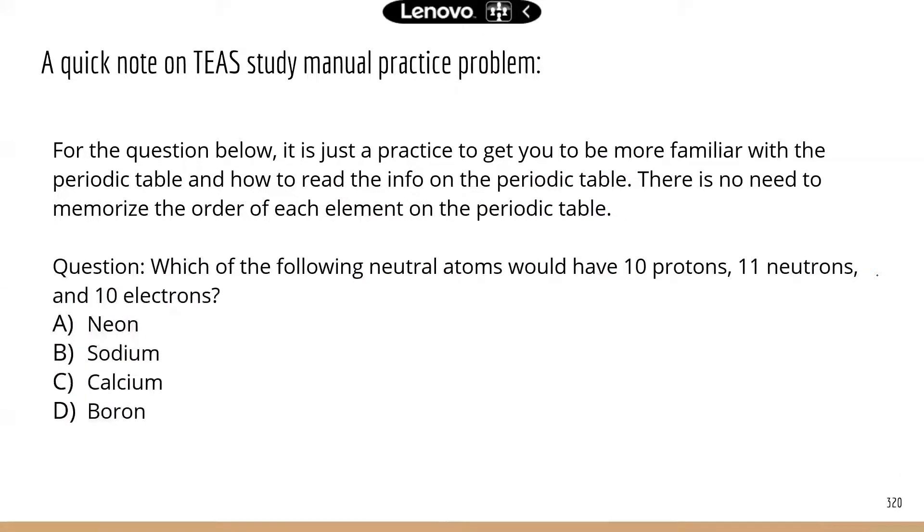I just want to note something from the TEAS study manual. There are some questions that require you to look up the periodic table. Like I said earlier, don't worry about memorizing anything. If you see a question like this, there will be a periodic table provided to you. So you can just click somewhere, get the periodic table out, and then use that information to answer the questions. For example, in here, it just asks you which of the neutral atoms would have 10 protons, 11 neutrons, and 10 electrons. You actually only need this information because the number of protons is the same number as atomic number. Go to the periodic table, find the tenth element, and that will be the correct answer.